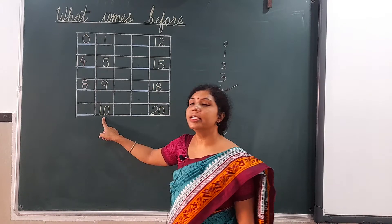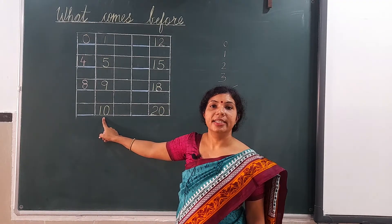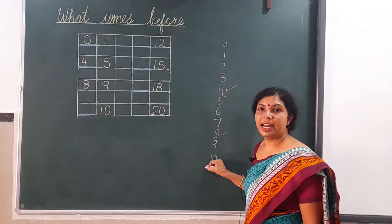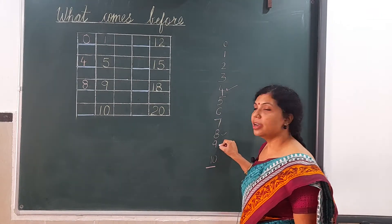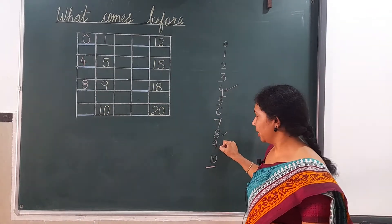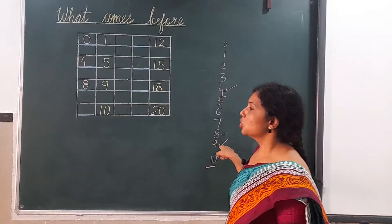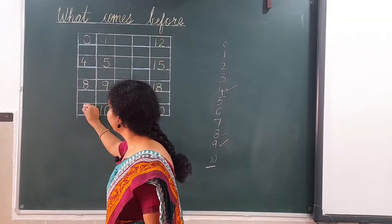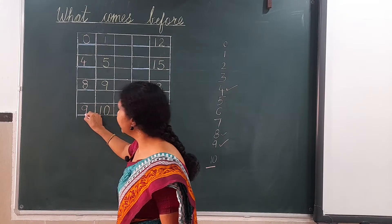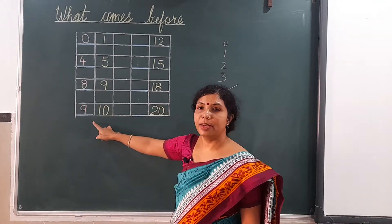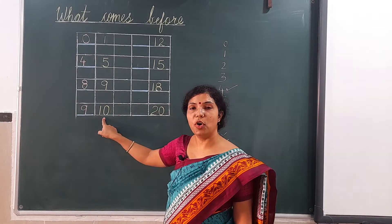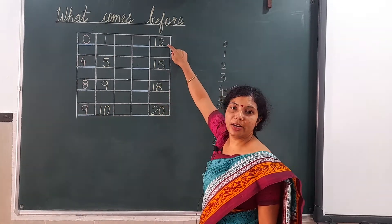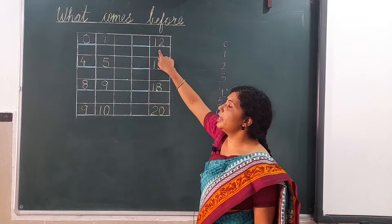Here it is 10. Which number comes before 10? Here it is written 10 and before 10, 9 is coming. So we have to write here 9. It means 9 comes before 10. Okay. Here next is 12.